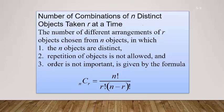The big thing about combinations that's really important: the order is not important — the order does not matter. The number of different arrangements of r objects chosen from n distinct objects, in which repetition is not allowed and order is not important, is given by the combinations formula.